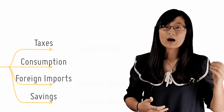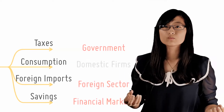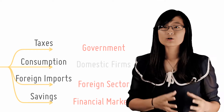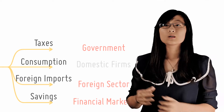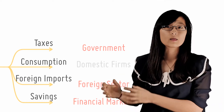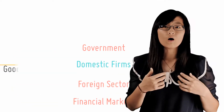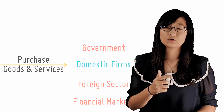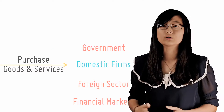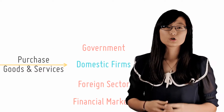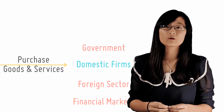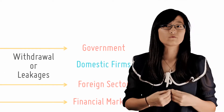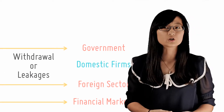So besides households and firms, the three other sectors in the economy are financial markets, the government, and the foreign sector. And not all the money you earn goes back to domestic firms through the purchase of goods and services. So when part of your salary goes into these three other sectors, they are called withdrawals or leakages.